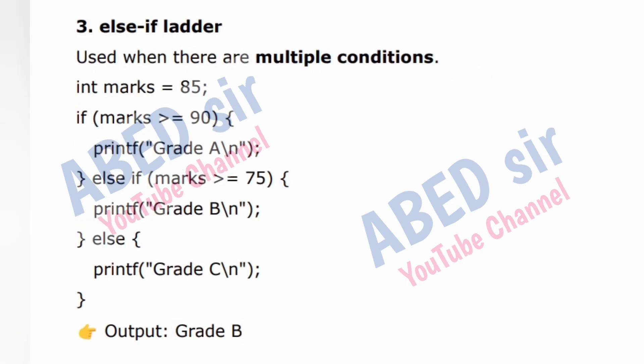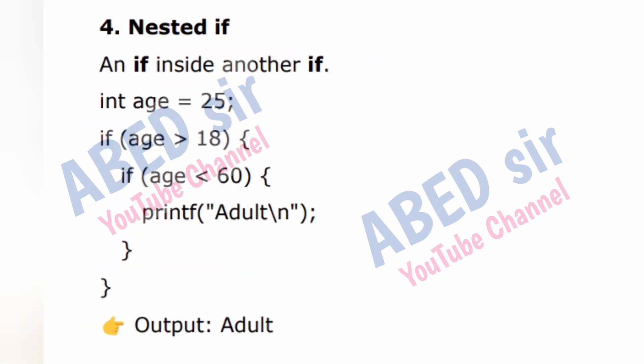3. Else-if ladder — used when there are multiple conditions. Example: int marks = 85; if (marks >= 90) { printf("Grade A\n"); } else if (marks >= 75) { printf("Grade B\n"); } else { printf("Grade C\n"); } Output: Grade B. 4. Nested if — an if inside another if. Example: int age = 25; if (age > 18) { if (age < 60) { printf("Adult\n"); } } Output: Adult.